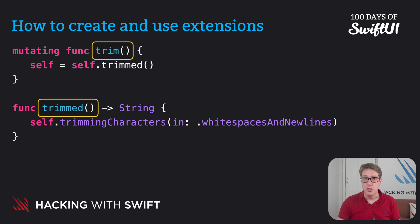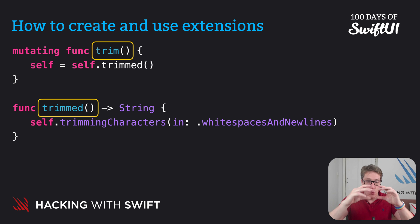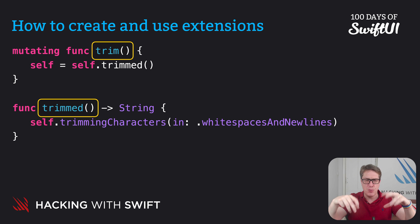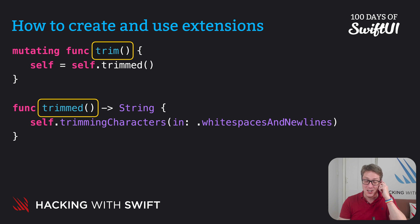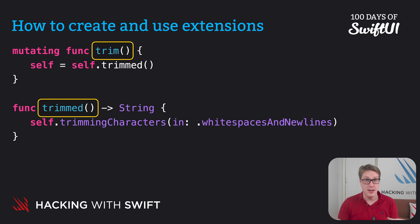You can also use extensions to add properties, but there is one rule: they must only be computed properties, not stored properties. The reason is straightforward — adding a new stored property would affect the actual size of the type's data. If we added stored properties to things like ints, all integers everywhere in iOS would require more storage, which would be a huge disaster. Fortunately, we can still get a lot done with computed properties — they are just code, with no storage behind them.